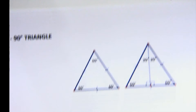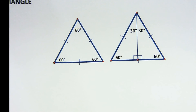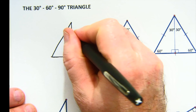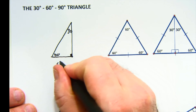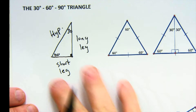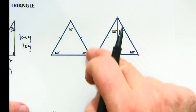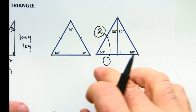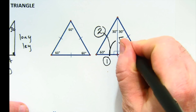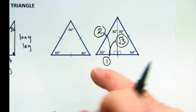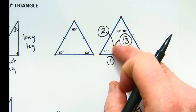The 30-60-90 triangle is formed by cutting an equilateral triangle in half. Its sides are a little more complex but can be memorized. The names are: the short leg, the long leg, and the hypotenuse. When you cut an equilateral in half, if the side was 2, the short leg is 1 (half the size), and applying the Pythagorean theorem gives the long leg as √3. The key relationships: hypotenuse to short leg is doubling or halving; and from short leg to long leg, multiply or divide by √3.